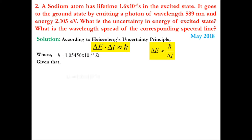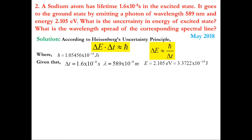The given data: sodium atom's lifetime in the excited state is Δt = 1.6×10⁻⁸ s. The wavelength of emitted light is λ = 589 nm = 589×10⁻⁹ m. Energy is 2.105 eV; converting to joules by multiplying by 1.602×10⁻¹⁹, we get E = 3.3722×10⁻¹⁹ J.